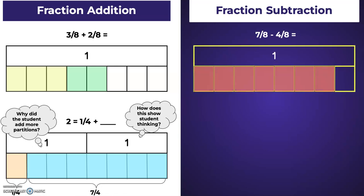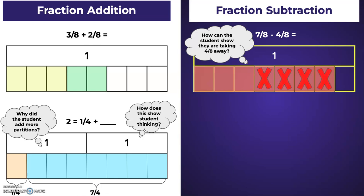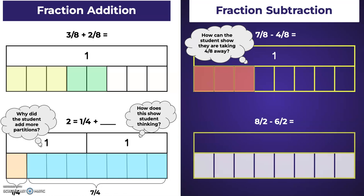Let's take a look at fraction subtraction. Seven-eighths minus four-eighths. How can students show they're taking four-eighths away? They might simply cross out four or they could remove four pieces or unshade them. Let's look at eight halves minus six halves. So what happens when I have an improper fraction? Well, let's look to see. If each one of those represent one half, I probably should label that these are halves. I needed to have eight halves. Let's see. One, two, three, four, five, six, seven, eight halves. What happens if I take away six of those halves? I am left with two halves. And I know that two halves is equivalent to one whole.